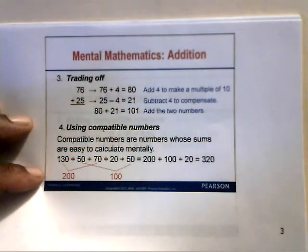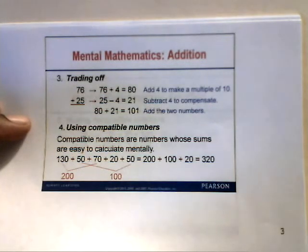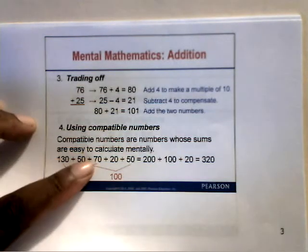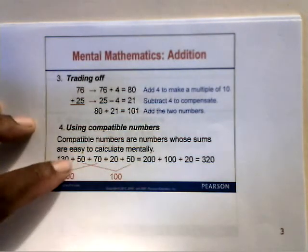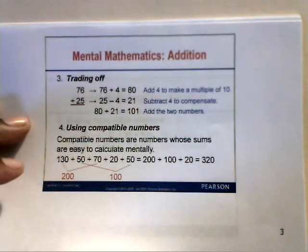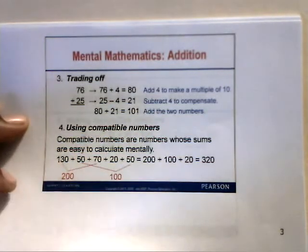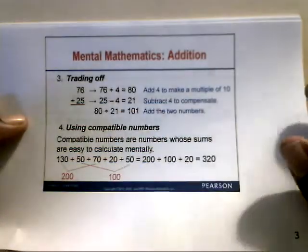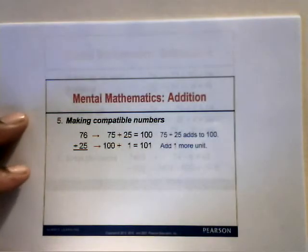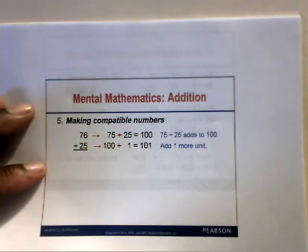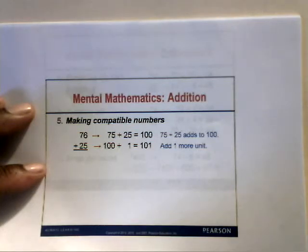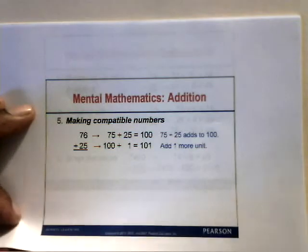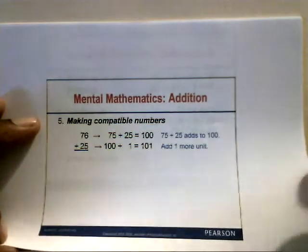Method four is using compatible numbers. For 130 plus 50 plus 70 plus 20 plus 50, we add 130 and 70 — compatible numbers that give us 200. Then 50 and 50 give us 100. So 200 plus 100 plus 20 gives us 320. Method five is making compatible numbers: for 76 plus 25, use 75 plus 25 equals 100, then add back the 1 we removed, giving 101.